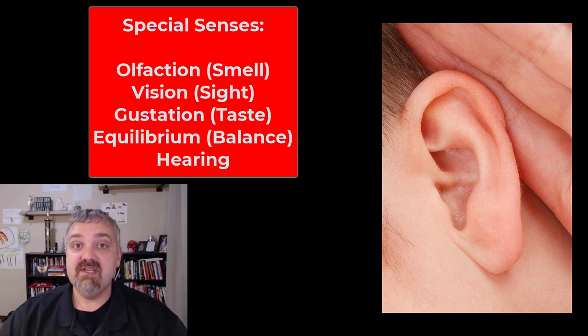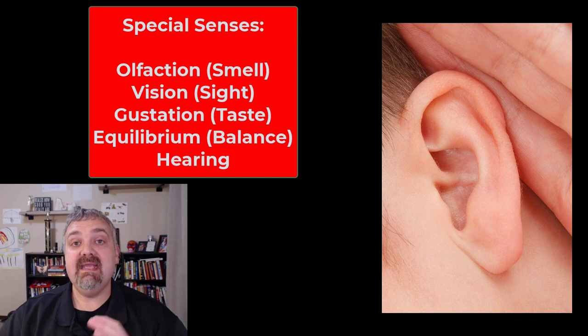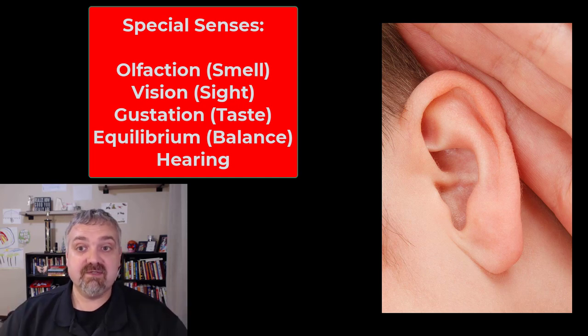So olfaction, vision, taste, equilibrium or balance, and hearing are going to be your special senses in that they're going to go on to their own special parts of the brain as well. So those are your general senses and your special senses.